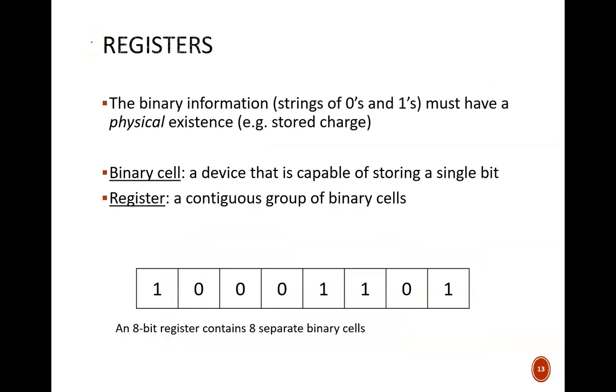Sometimes we want to process or transmit signals. Other times we want to store them in memory. And the devices used for storage are called registers. A binary cell is simply a device that can store one single bit, either a 0 or a 1. A register is a contiguous group of binary cells. The diagram at the bottom illustrates these ideas simply. Each box is one binary cell. The eight of them together make up an 8-bit register.